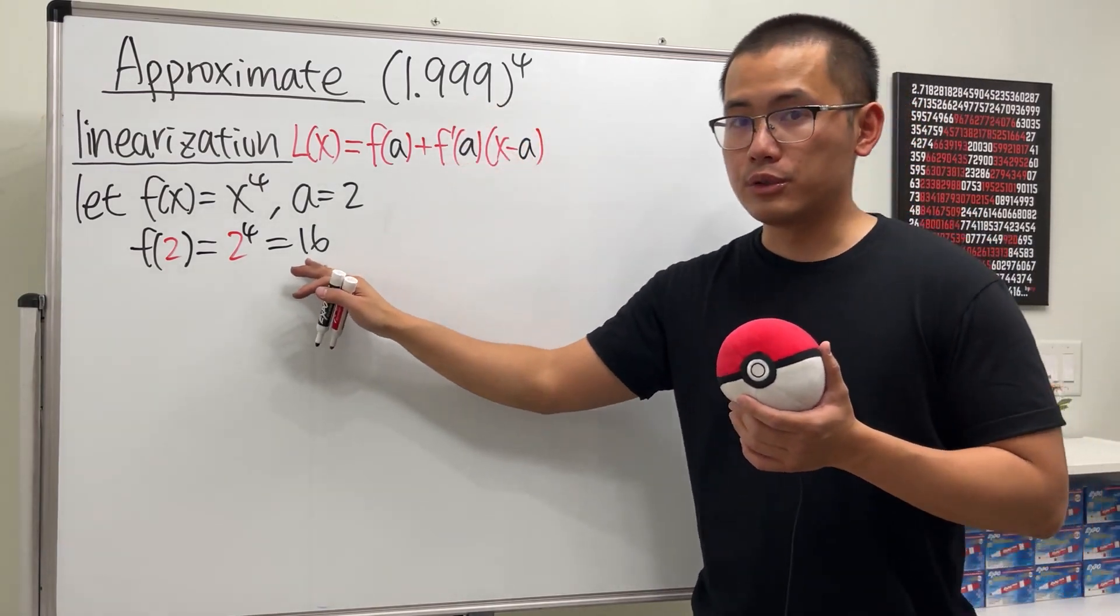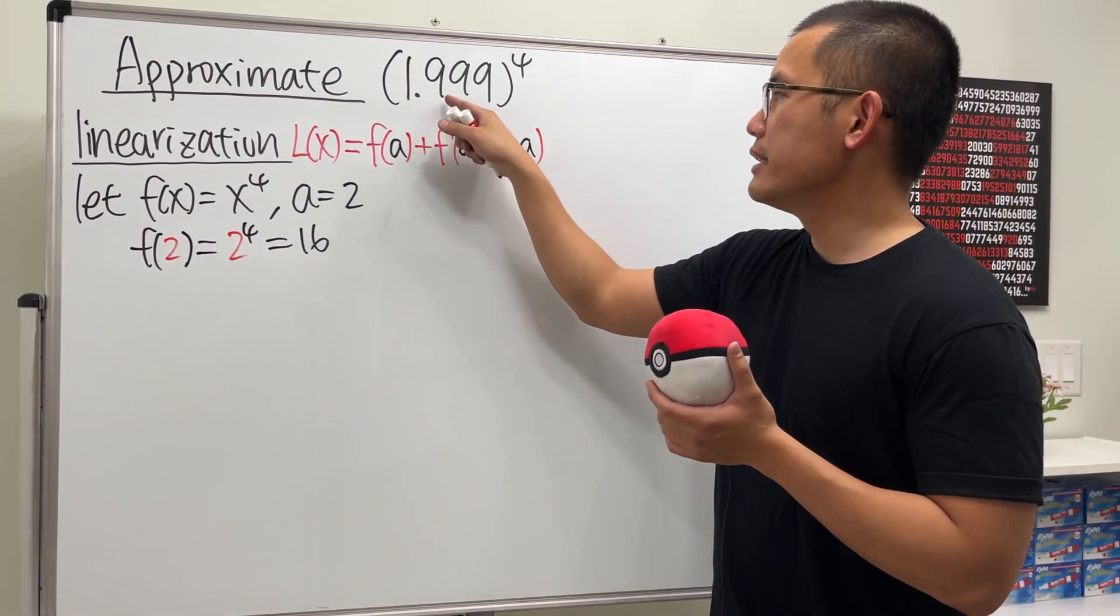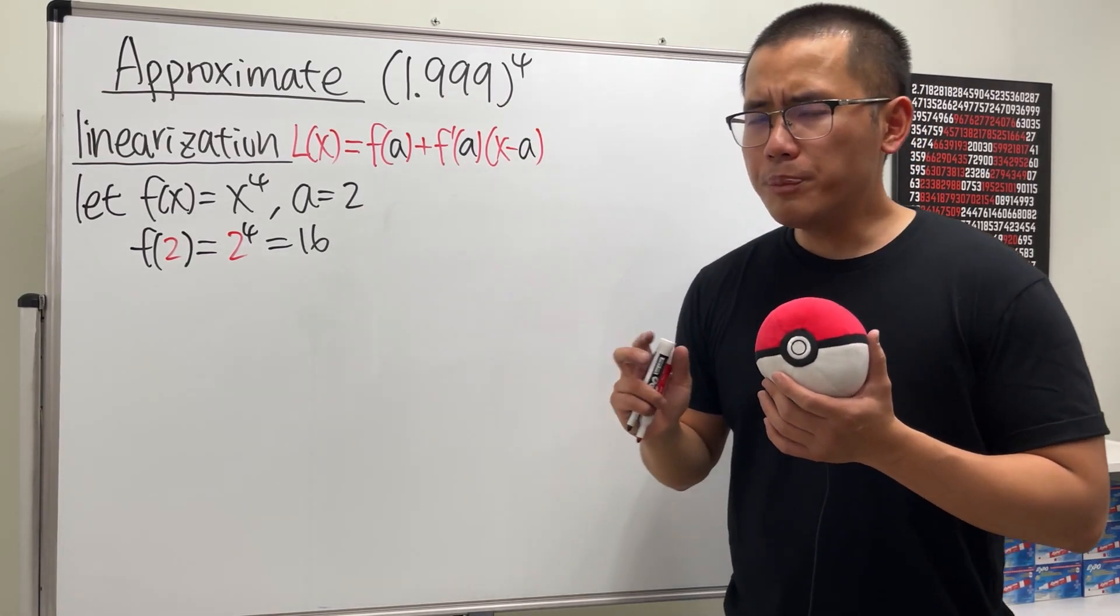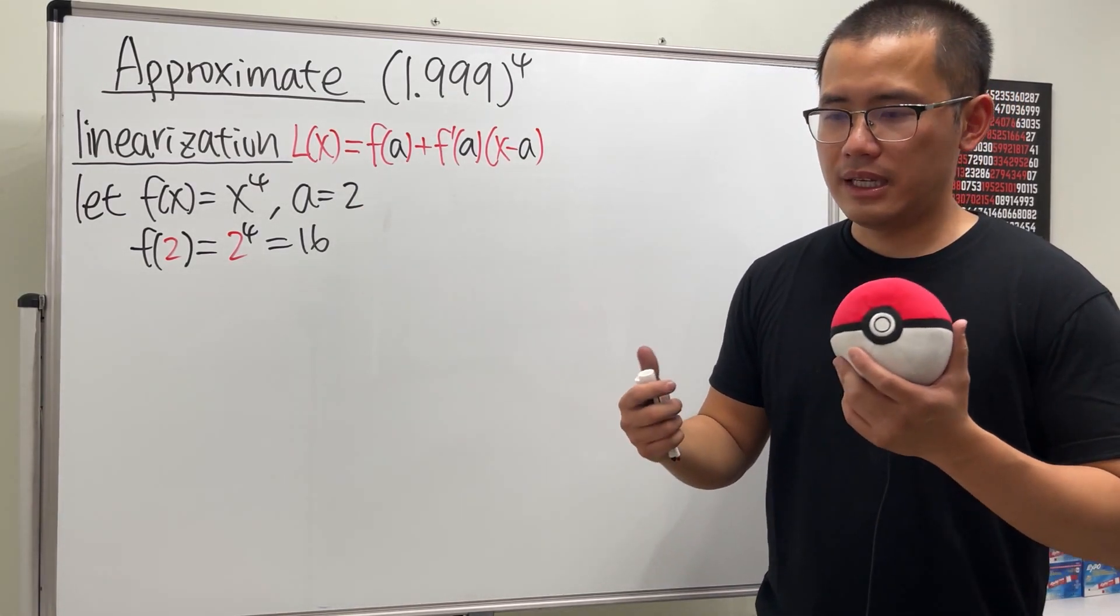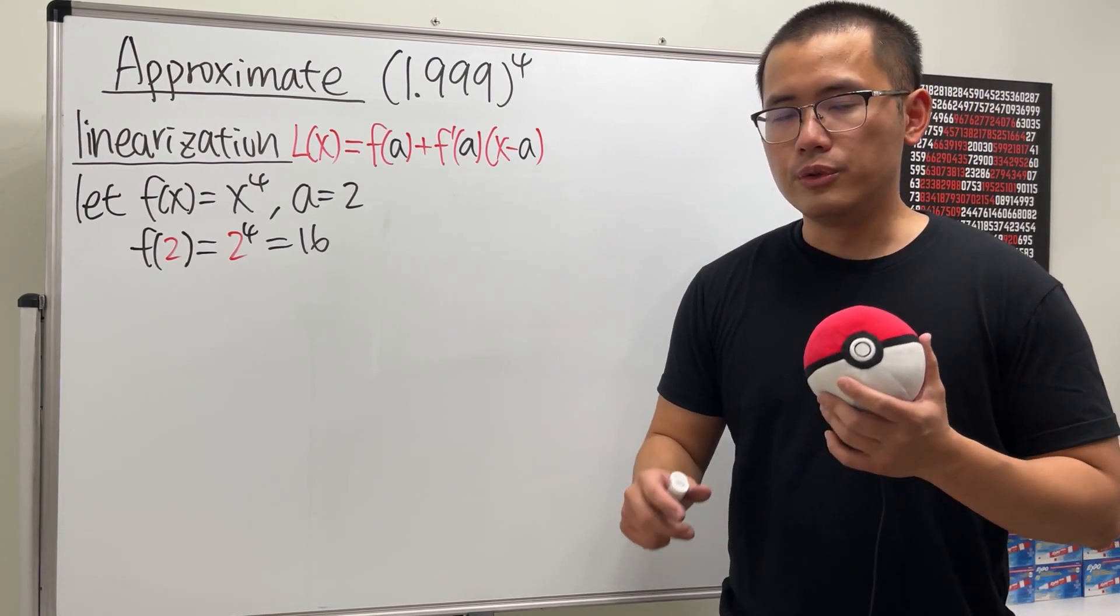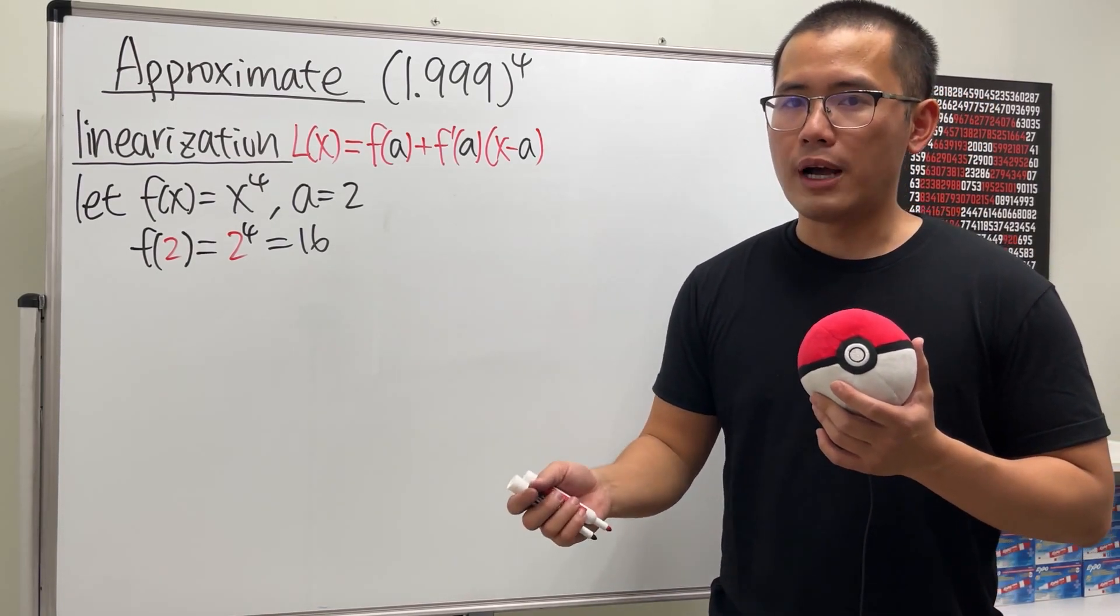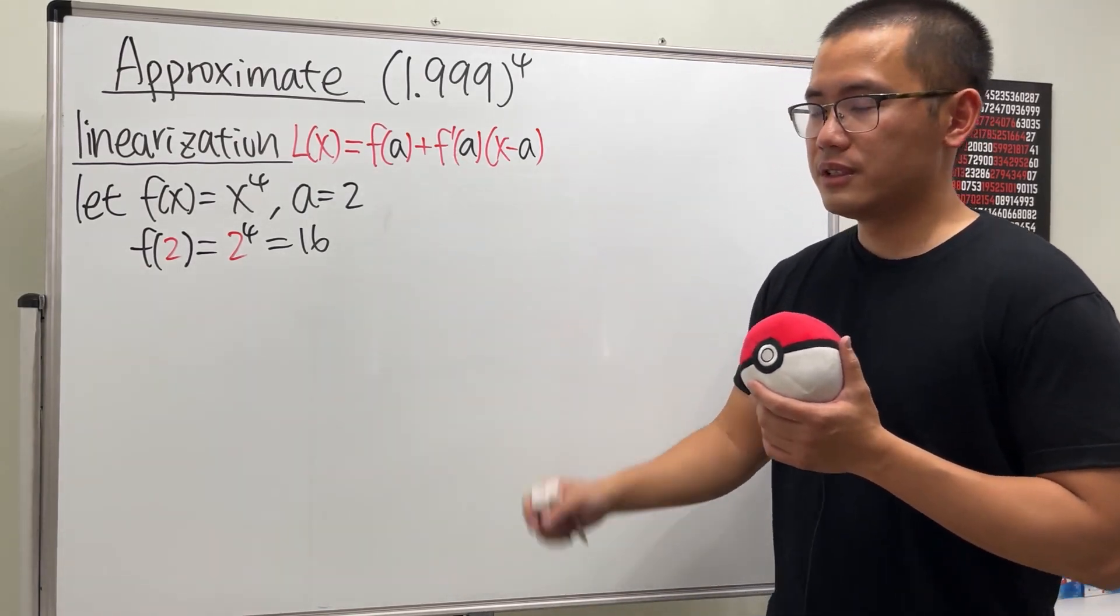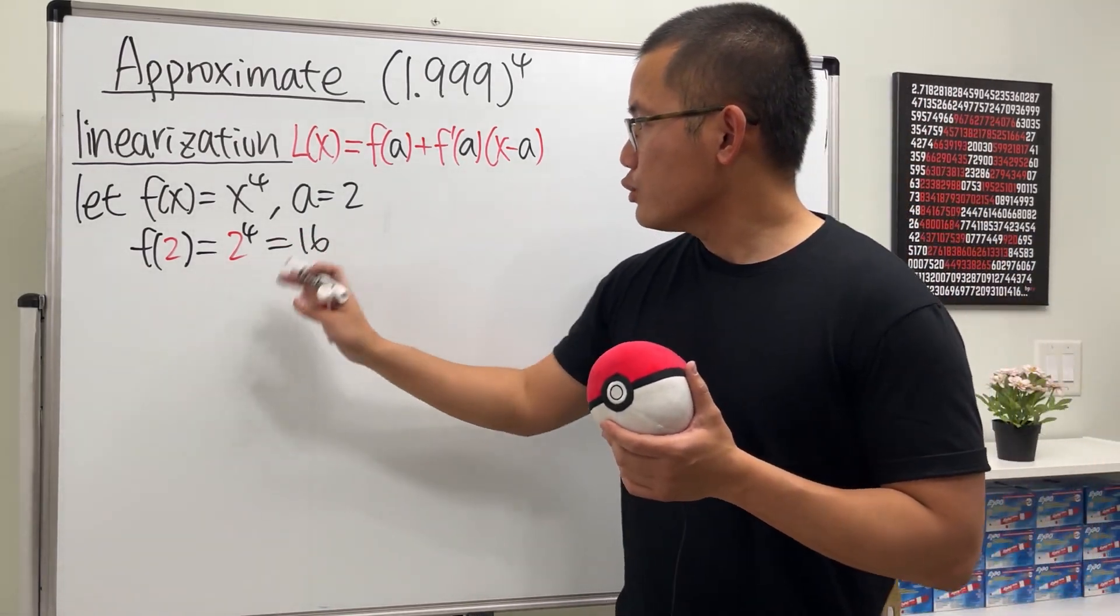In fact, this will be pretty close to 16 because 1.999 is pretty close to 2. But you have to be really careful, though. I'll give you another video later on that shows you sometimes local linear approximation might not work so well. But let's finish this one first.